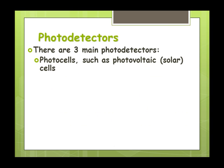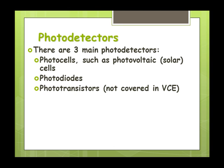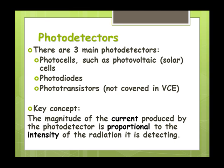Now I mentioned a photodetector before. There's three main photodetectors. The first one is photo cells, such as solar cells, similar to what you see on the roof of a house, but we can make them a lot smaller. We've got photodiodes, and the third one, which is not covered in this topic, is phototransistors. A key concept here is that the magnitude of the current produced by the photodetector will be proportional to the intensity of the radiation falling on it.